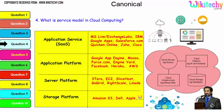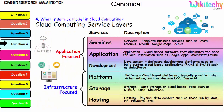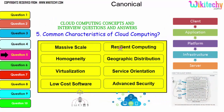The service layers include application services, application platform, server platform, and storage platform — with storage provided by services like Amazon S3, Dell, and Apple. The important service layers are services, application, development platform, storage, and hosting, with typical examples under each service category. These are important services commonly asked about in cloud computing interviews.